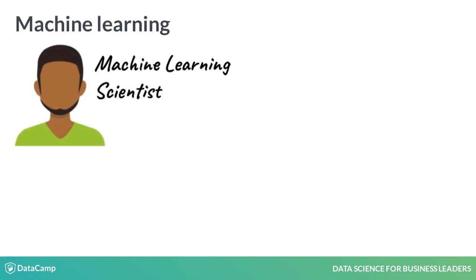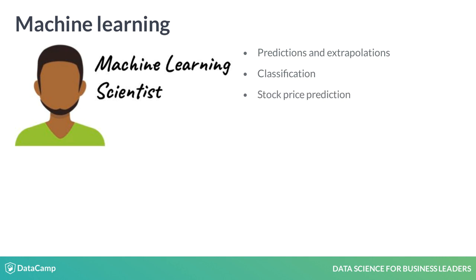Machine learning is perhaps the buzziest part of data science. It's used to extrapolate what's likely to be true from what we already know. These scientists use training data to classify larger, unrulier data. Machine learning can tell us how much money a stock might be worth next week, which images contain a car, or what sentiments are expressed by a set of tweets.